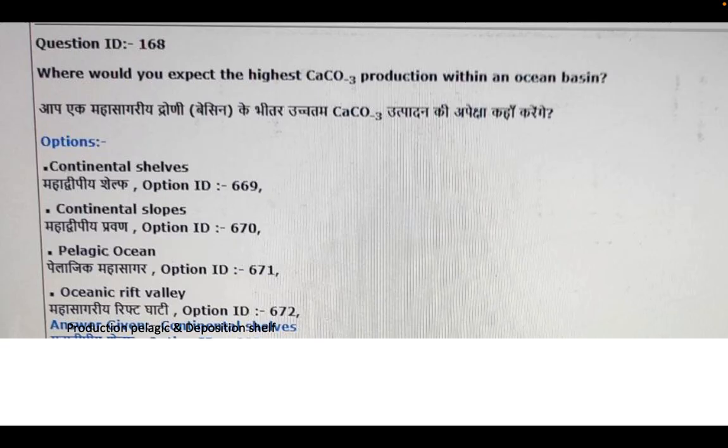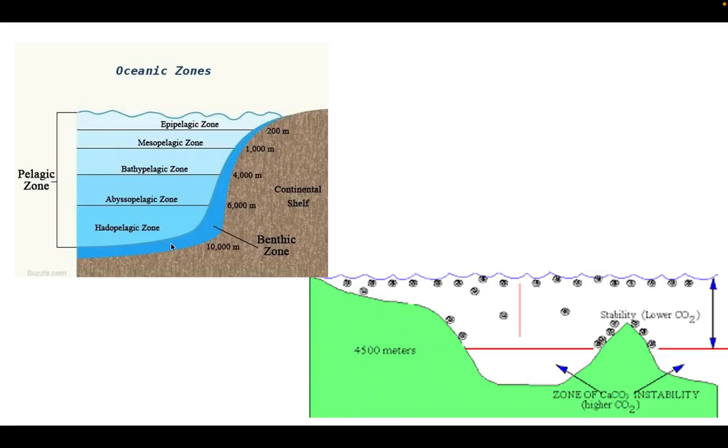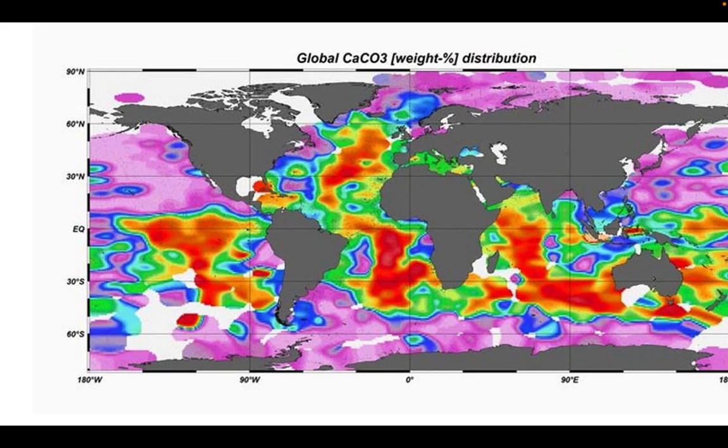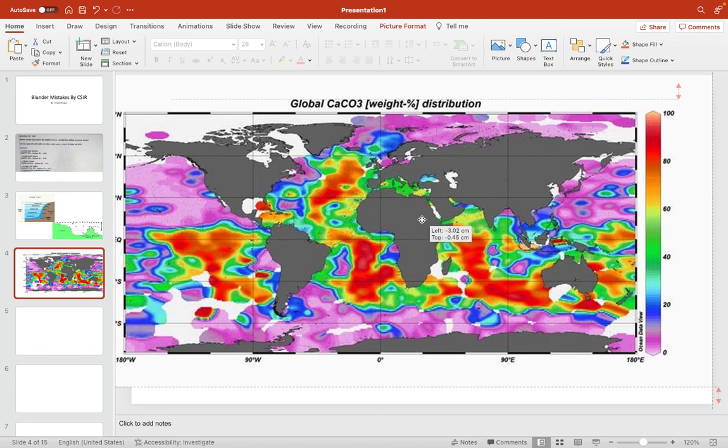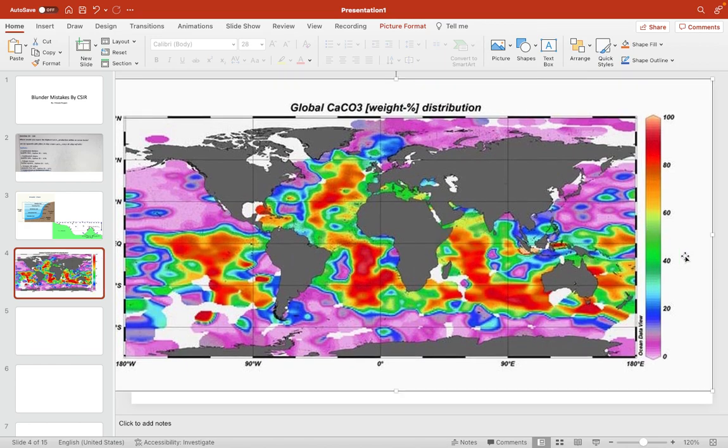So when it's deposition I will go with the continental shelf, but when it is production, where it forms, it always forms in the waters, in the pelagic waters, right. And here you can see the global calcium carbonate weight percentage distribution. You can literally see, let me move to the right, and here you can see the values, these red values you can see.